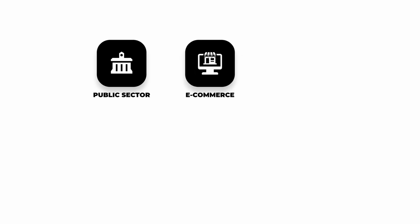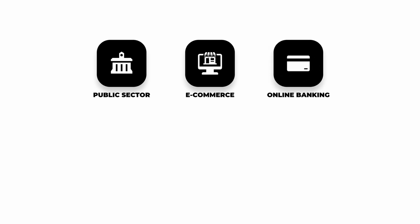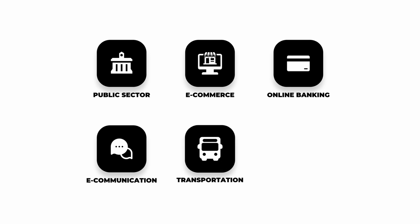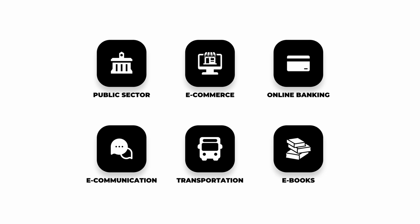Which EU websites should enable accessibility, and when? Public sector websites and mobile apps that serve citizens, like government portals, universities, and hospitals. E-commerce websites and apps that sell goods or services directly to consumers. Online banking portals that let customers view accounts, make payments, and manage cards. Telecom and internet provider portals where customers manage plans, bills, and support. Passenger transport websites and apps for searching, booking, and checking in for air, rail, bus, or ferry. E-book stores and reading platforms that let users purchase, download, and read digital books.